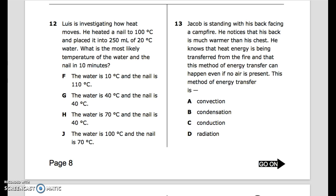Number 12: Luis is investigating how heat moves. He heated a nail to 100 degrees Celsius and placed it into 250 milliliters of 20 degrees Celsius water. What is the most likely temperature of the water and the nail in 10 minutes? F. The water is 10 degrees Celsius and the nail is 110 degrees Celsius. G. The water is 40 degrees Celsius and the nail is 40 degrees Celsius. H. The water is 70 degrees Celsius and the nail is 40 degrees Celsius. J.